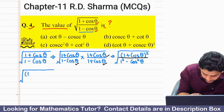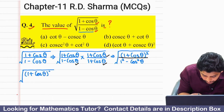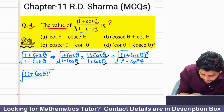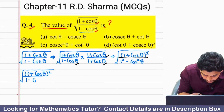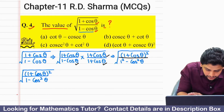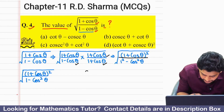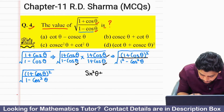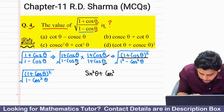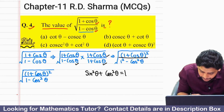The numerator becomes (1 plus cos theta) whole to the power 2, and the denominator — we can write it as (1 minus cos theta) into (1 plus cos theta), which equals (1 minus cos squared theta).